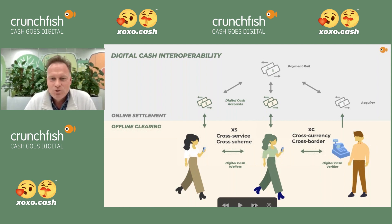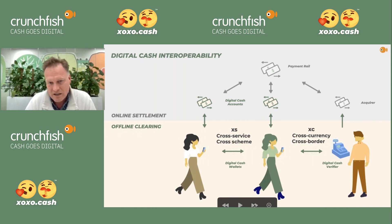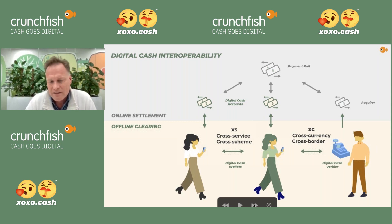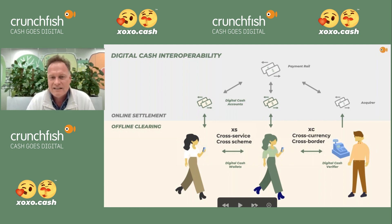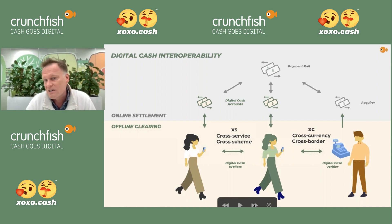It is no harder to get a merchant in Sweden to accept a payment from a Swedish payments app than to have one in Italy. The same technology allows a merchant in Italy to trust that they will get paid, and then the Italian payment service will simply request the international transfer to receive the money. With our product, we can do cross-service, cross-scheme, cross-border, and cross-currency — a truly flexible solution.